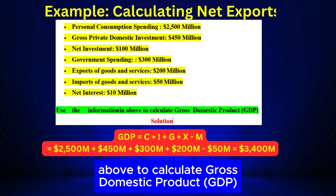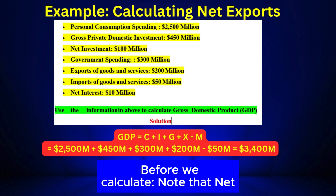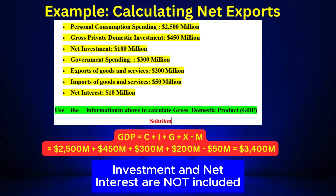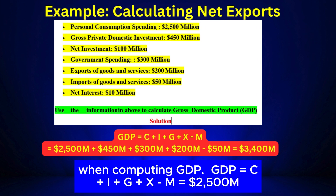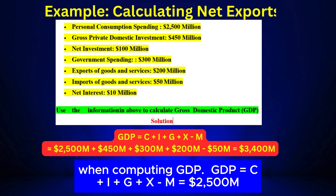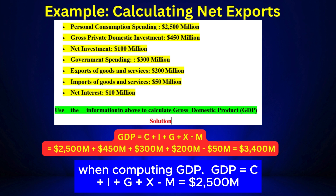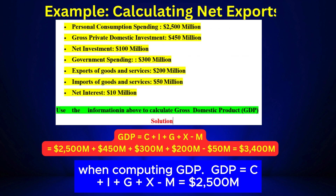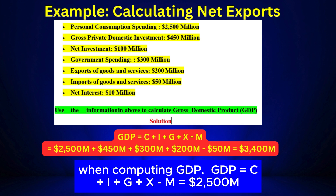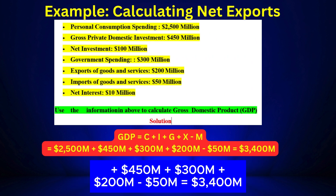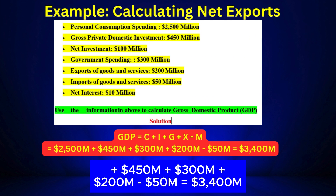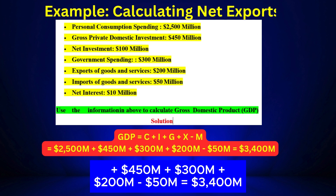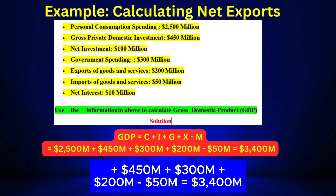Note: Net investment and net interest are not included in the GDP equation — these values must be ignored when computing GDP. GDP = C + I + G + X − M equals $2,500 million plus $450 million plus $300 million plus $200 million minus $50 million equals $3,400 million.